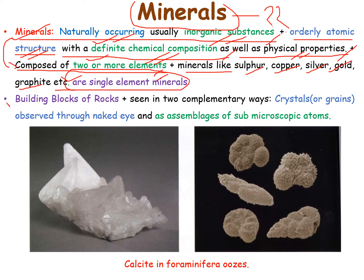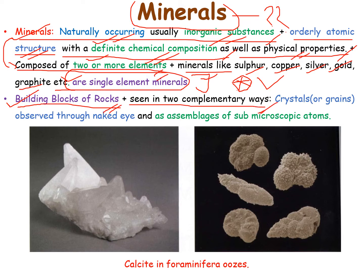So what does a mineral have? Minerals have constituents of elements arranged in an orderly fashion. If we consider these elements, this is the structure of that mineral arranged in an orderly fashion. Minerals are the building blocks of rocks, and they are seen in two complementary ways: the first way is as crystals or grains observed through the naked eye.